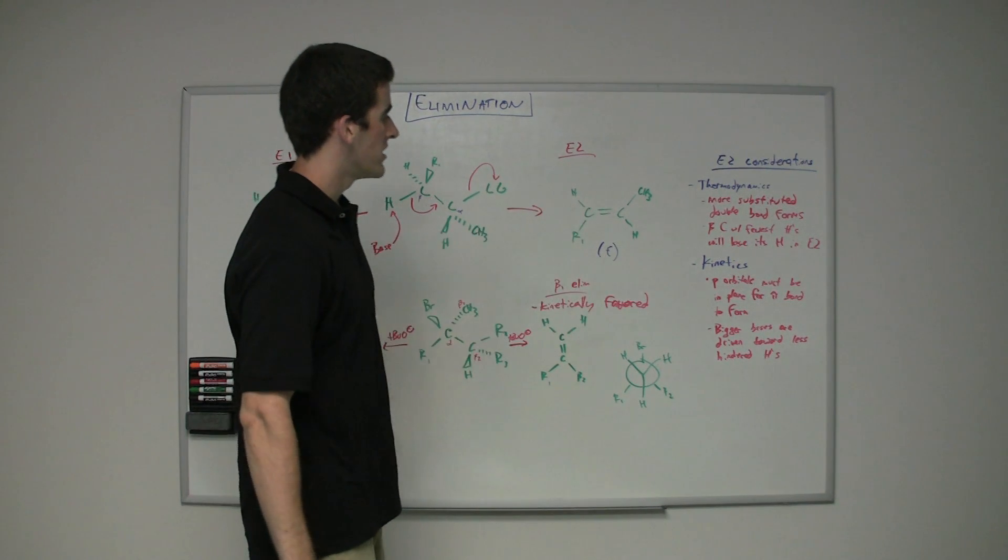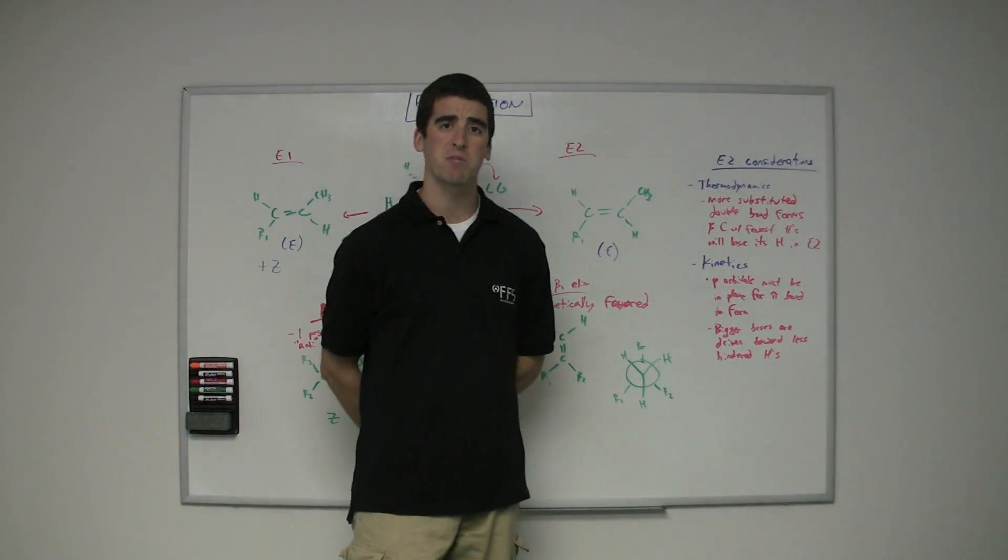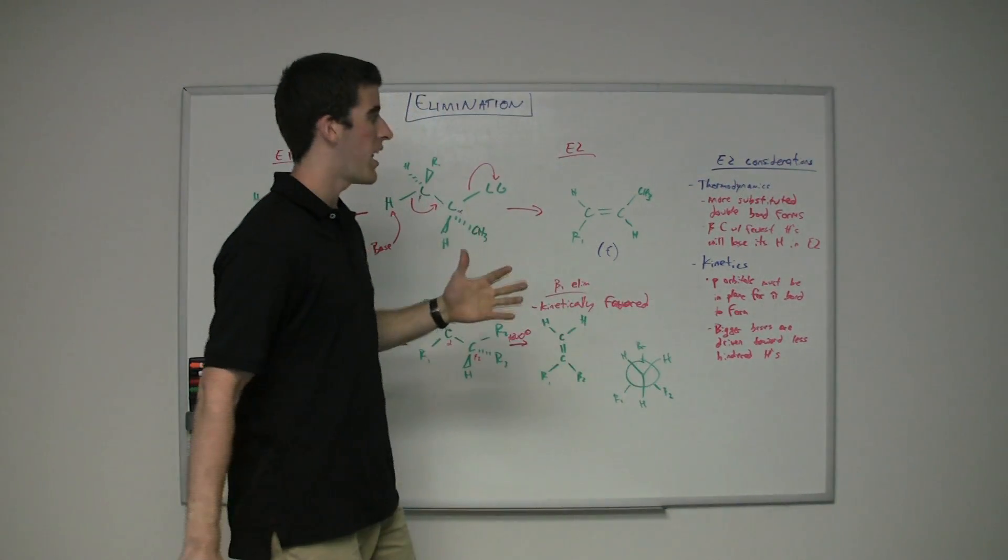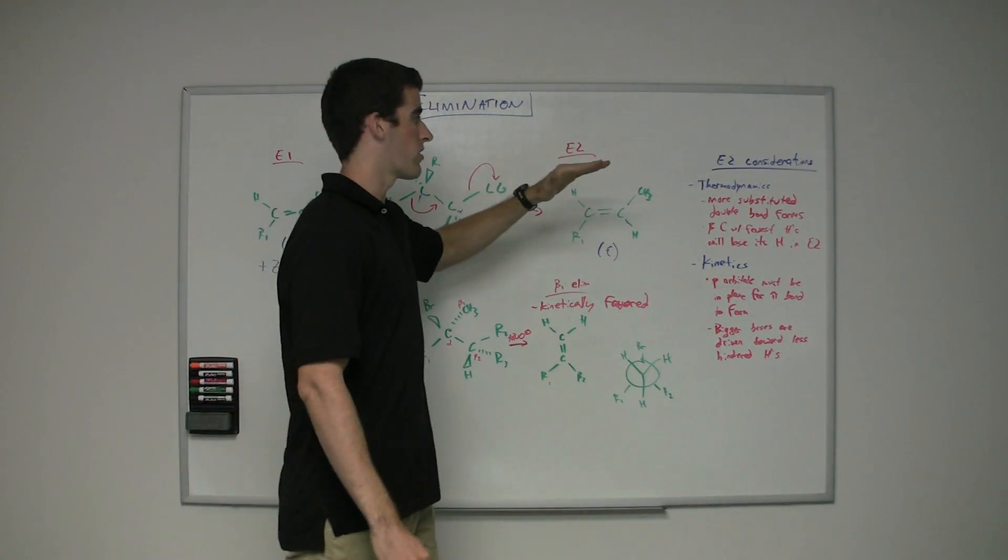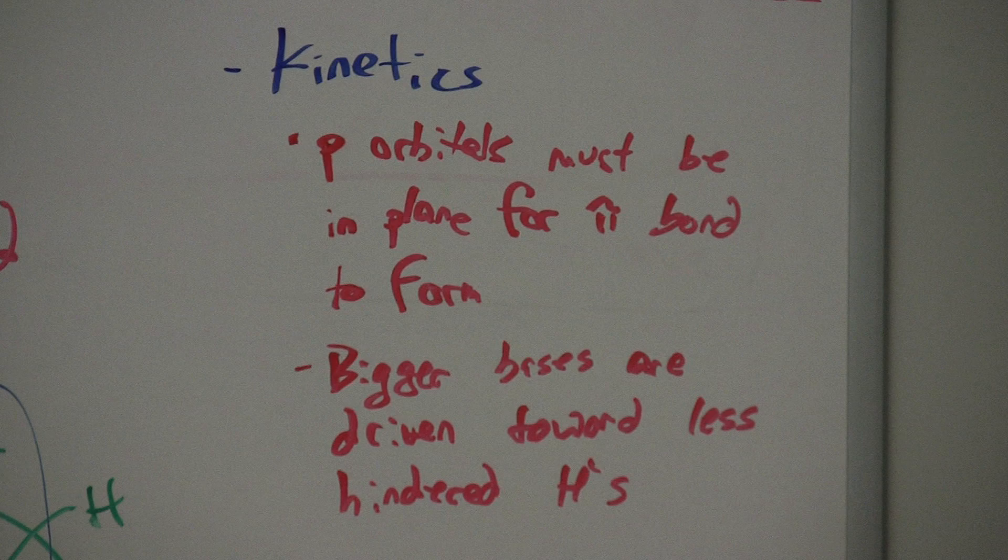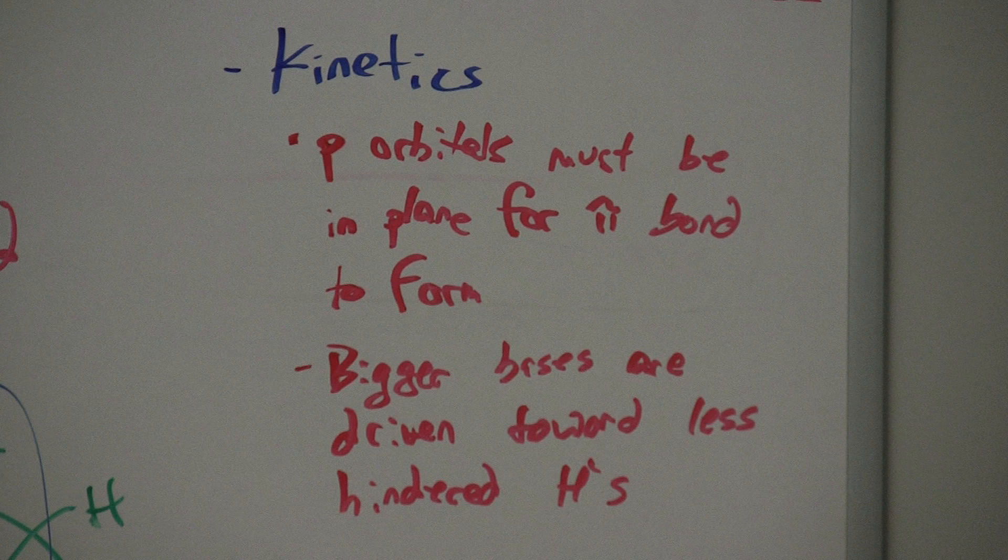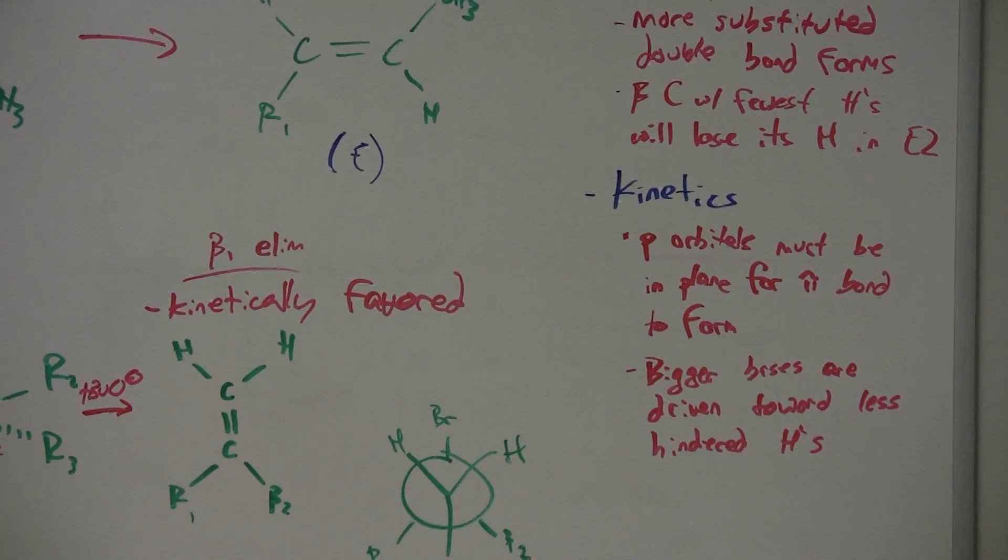So we look at the second consideration here. It's going to kind of contrast with thermodynamics. If you have kinetics consideration, you're not really going to be looking for thermodynamics and vice versa. With kinetics, you're really looking about that anti-alignment, the planar thing. P orbitals must be in the plane for the pi bond to form. That's what's going on in this mechanism here.